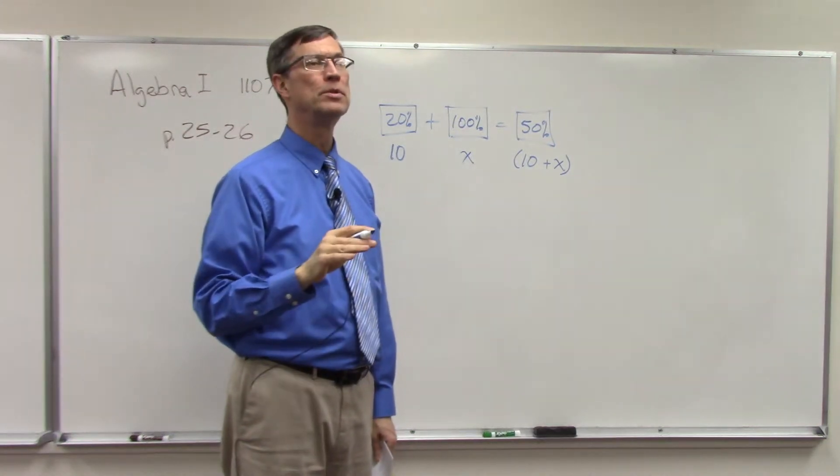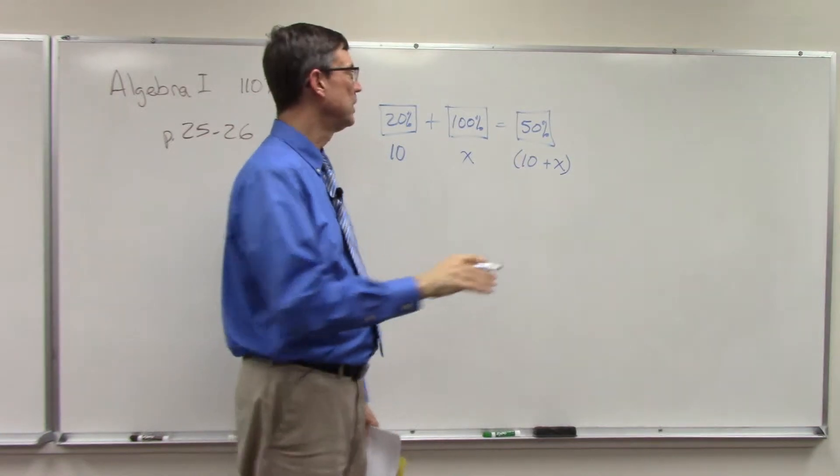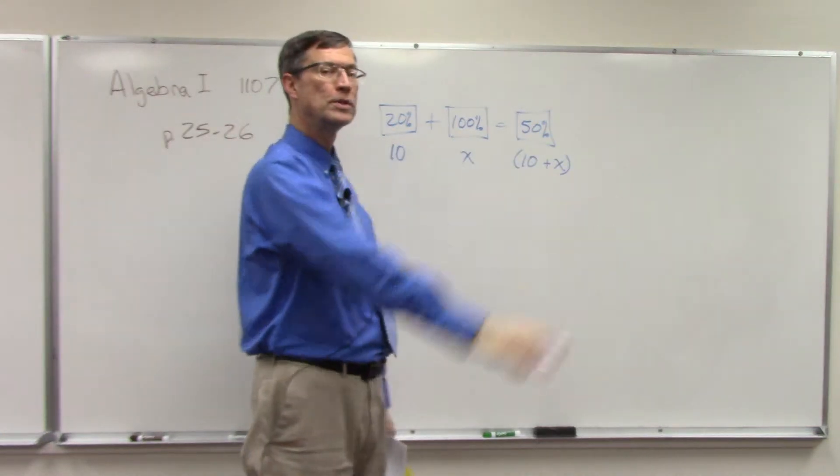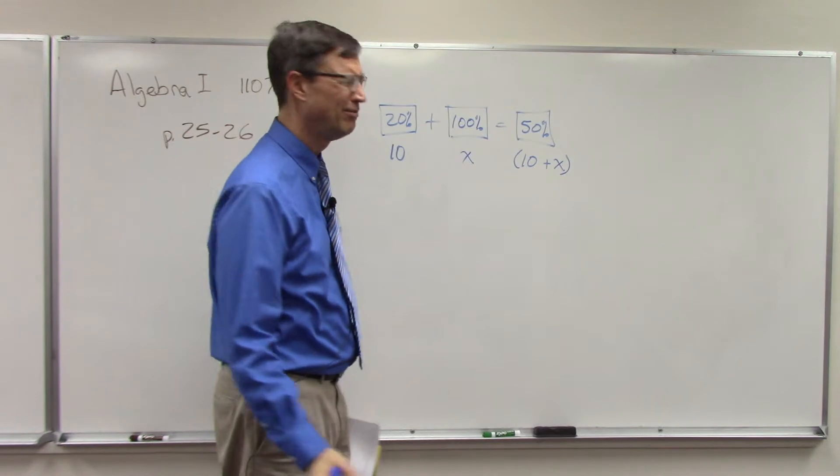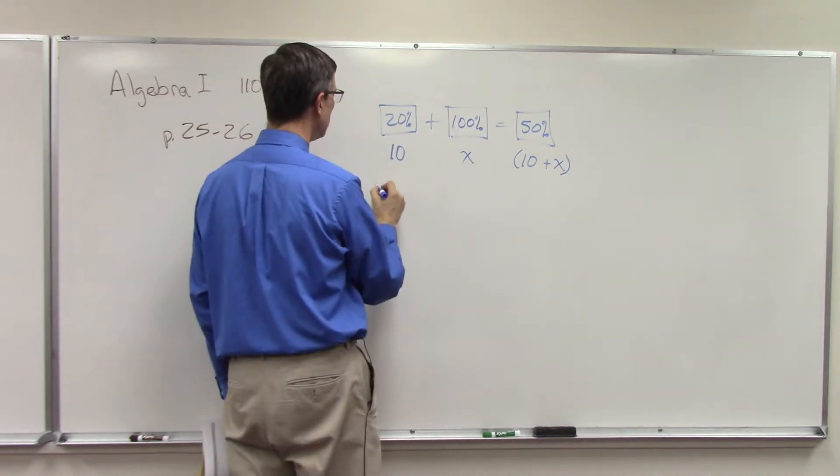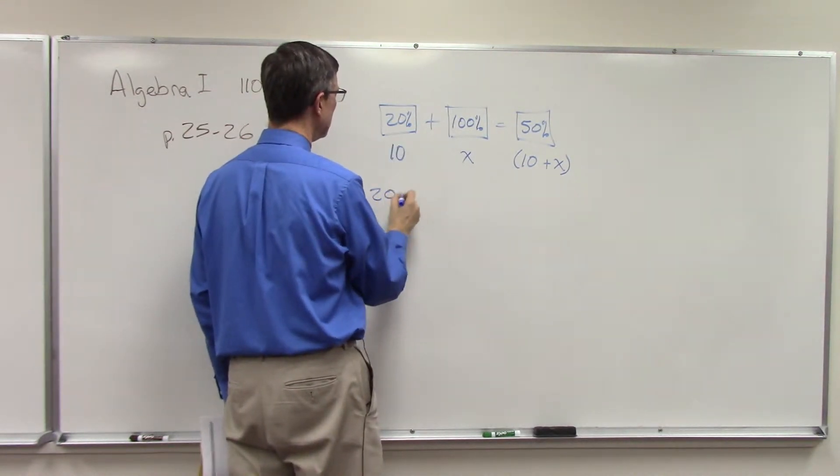Now I'm just going to multiply these together. The pace and some textbooks will convert all of the percents into decimals. Because we have percents on both sides of the equation, it's actually easier if we just leave it. So I'm going to multiply 20 times 10 and get 200.